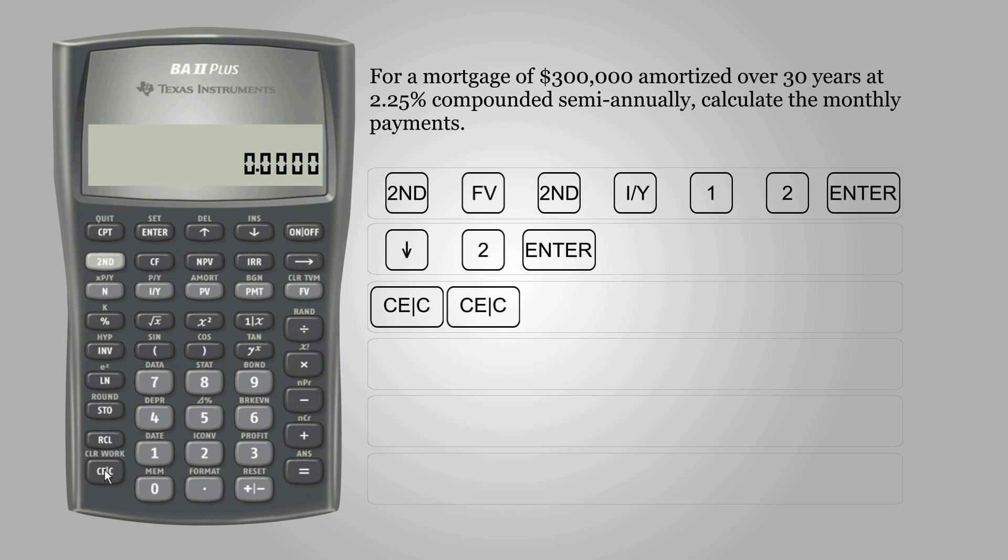For number of payments, we need to multiply number of years by the PY value. We can use the payment multiplier. Enter number of years, 30,